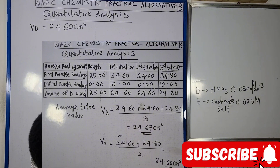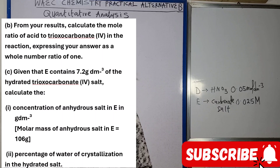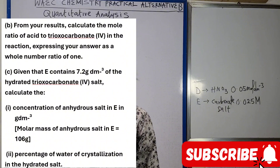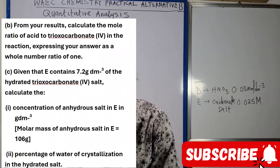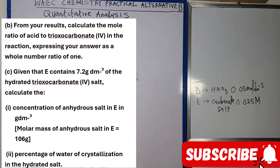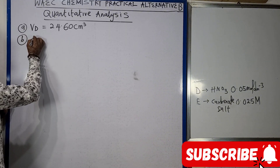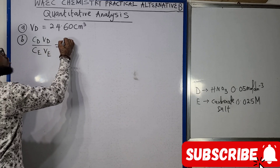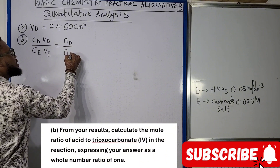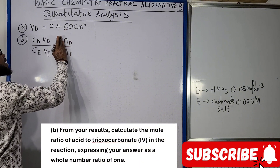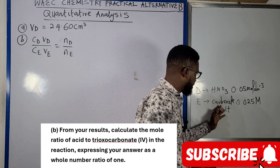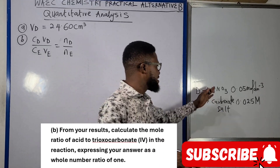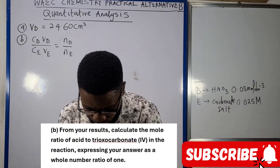From your results, calculate the mole ratio of acid to carbonate salt in the reaction, expressing your answer as a whole number ratio. To calculate the mole ratio, we use: (cD × VD) / (cE × VE) = nD / nE. Since we were not told the identity of the carbonate, no chemical equation was given for this question.